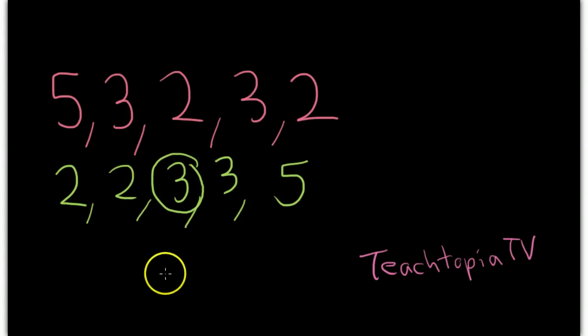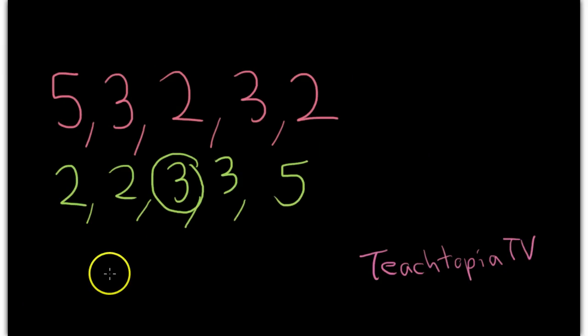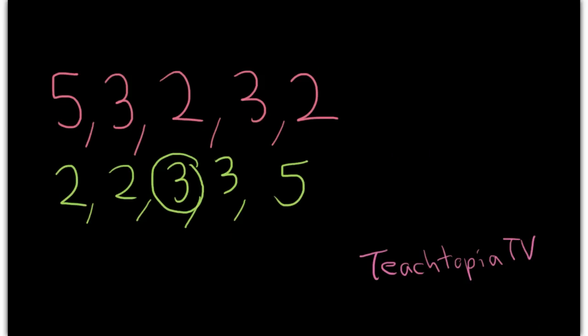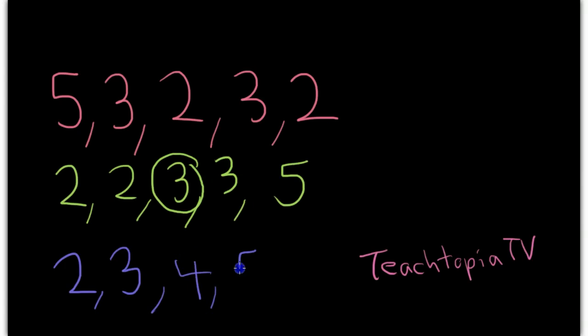Now, this was a simple one. We have two numbers to the left, two numbers to the right. But what if you were told to find the median for a set of numbers like this? 2, 3, 4, 5.